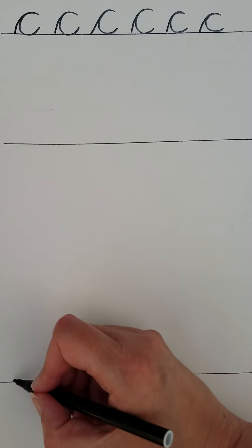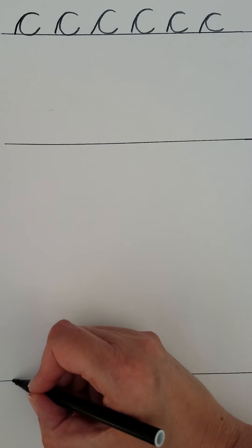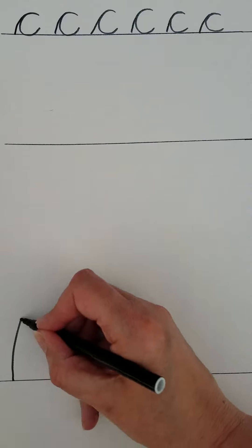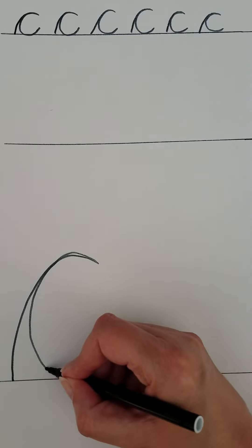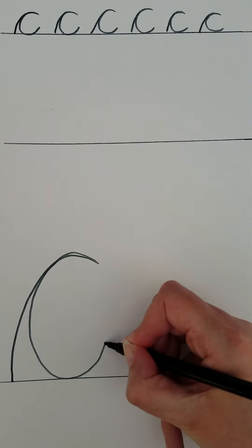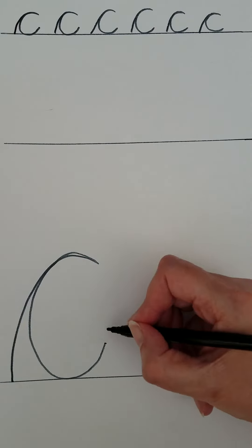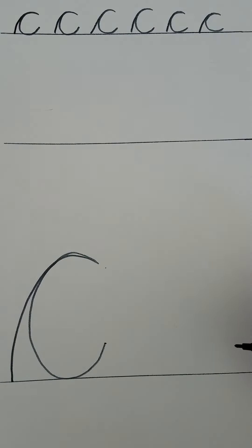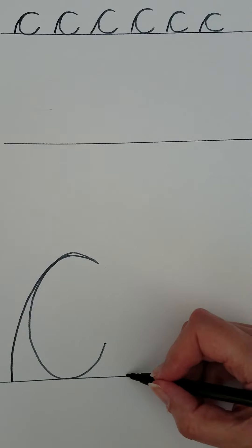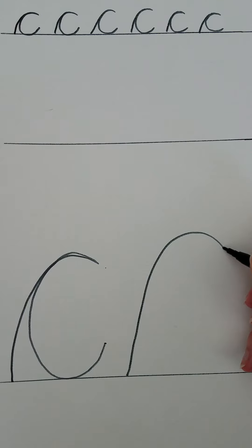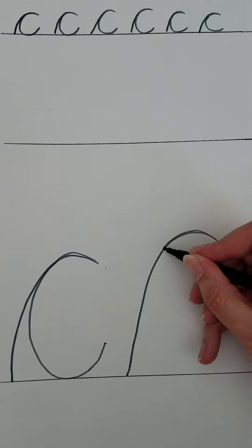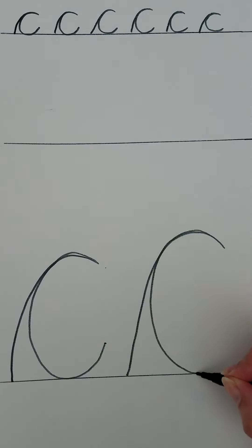Start on the line as always, up and over just like an arc, background in a circle, stop — they don't touch. That's it, exactly on the line: up and over, background in a circle like an arc, then stop.